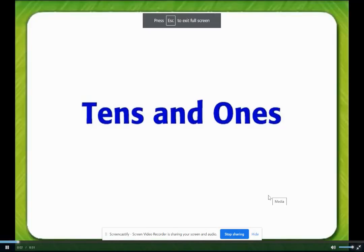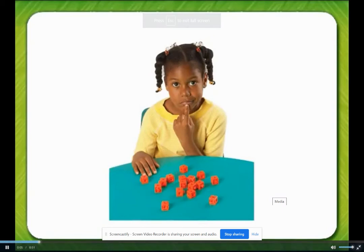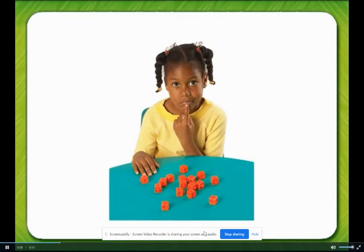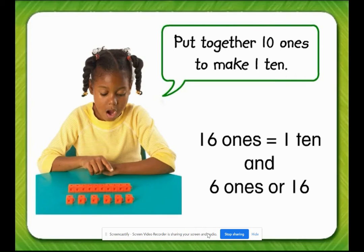Tens and ones. You can show a number as tens and ones. You can regroup ten ones as one ten. Put together ten ones to make one ten. The girl has one ten and six ones remaining. Sixteen ones equals one ten and six ones, or sixteen.